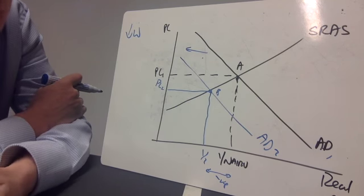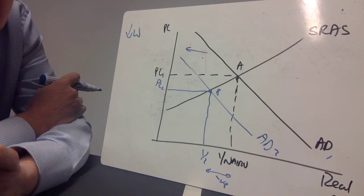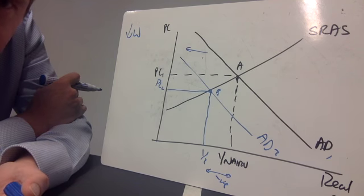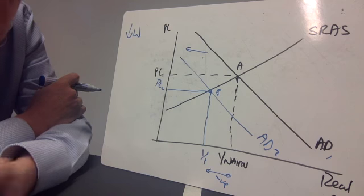Unemployment is - there's lots of unemployed workers looking for jobs. Clearly, in a labor market diagram there's excess supply. That's going to push down wages.